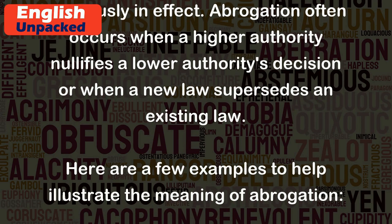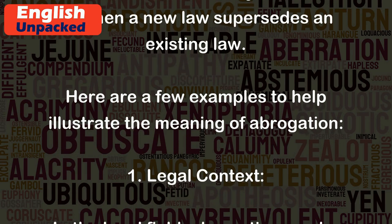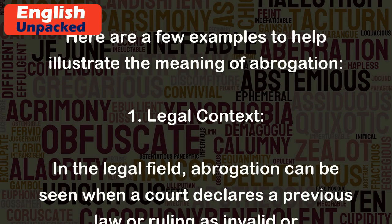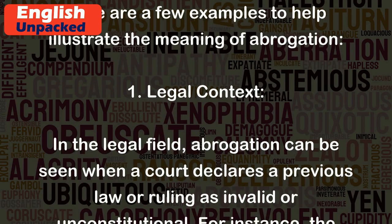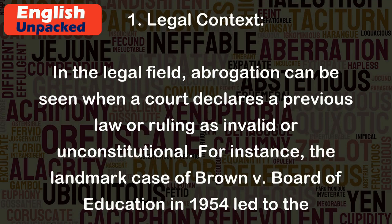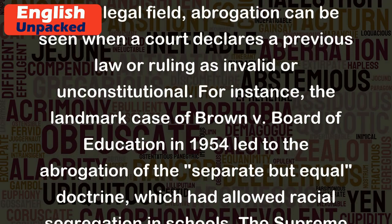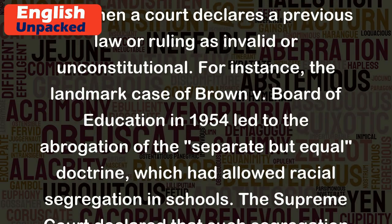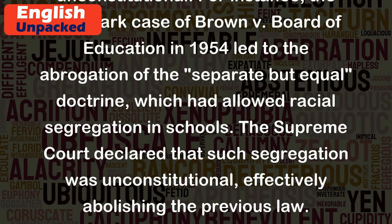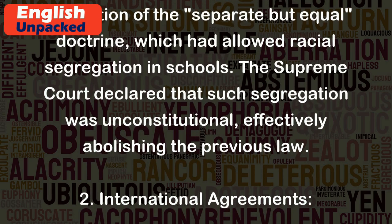Here are a few examples to help illustrate the meaning of abrogation. 1. Legal Context: In the legal field, abrogation can be seen when a court declares a previous law or ruling as invalid or unconstitutional. For instance, the landmark case of Brown v. Board of Education in 1954 led to the abrogation of the separate-but-equal doctrine, which had allowed racial segregation in schools. The Supreme Court declared that such segregation was unconstitutional, effectively abolishing the previous law.